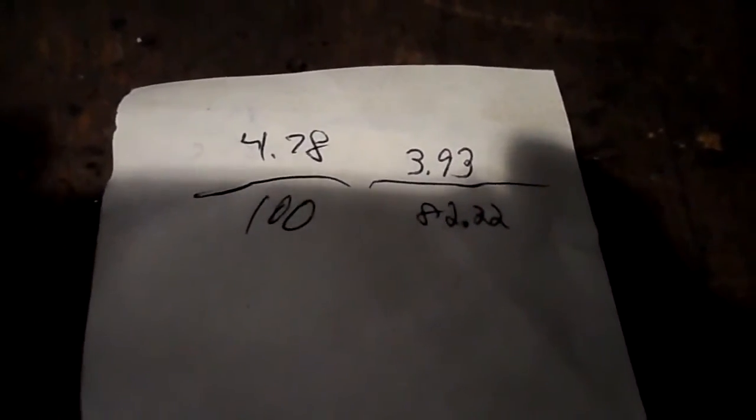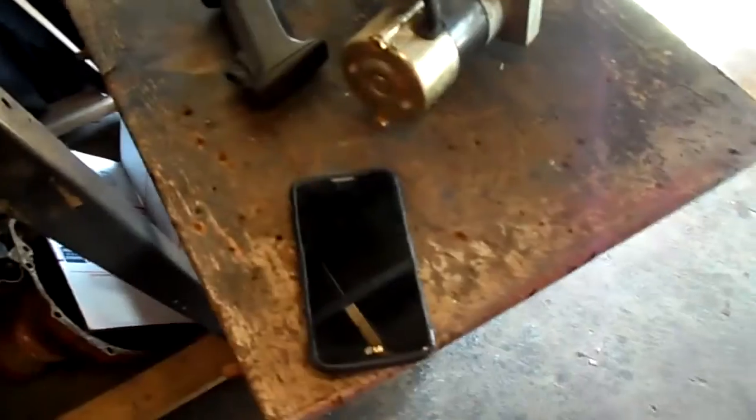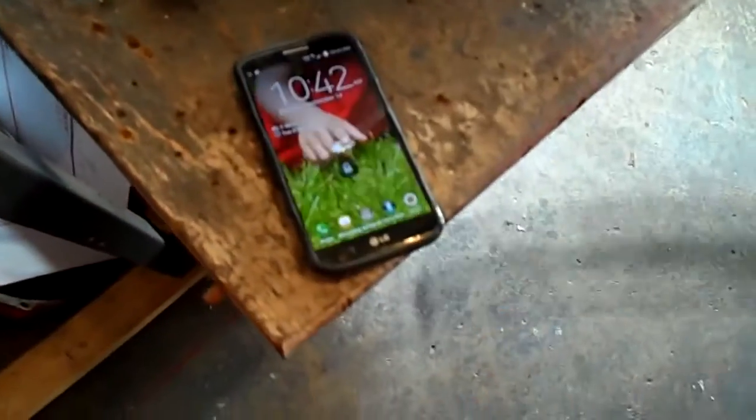Alright, so 4.78 kilowatts is 100 percent and 3.93 kilowatts is 82 percent. So the solar tracking panels actually did about 18 percent better in this case. They probably would have done a little better if they were angled a little bit better towards the sun like the flat panels.